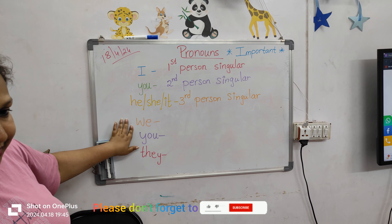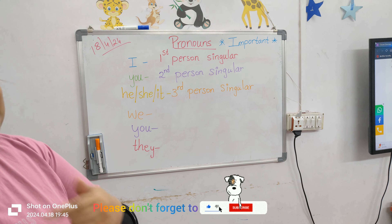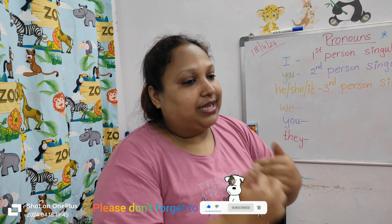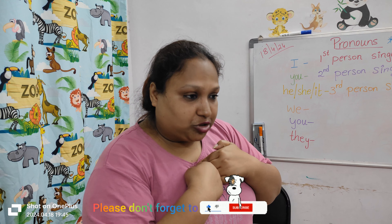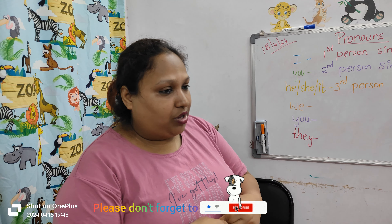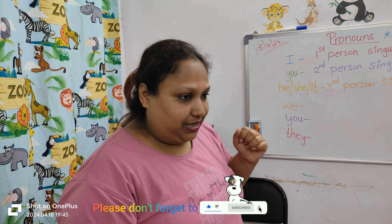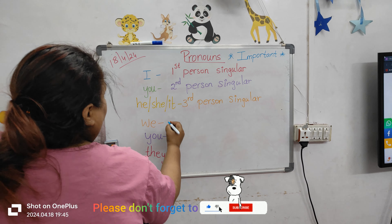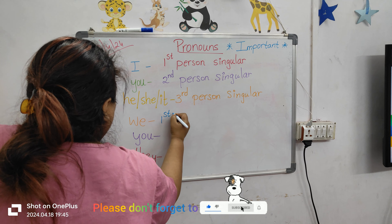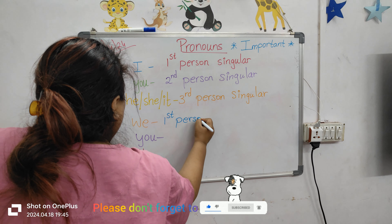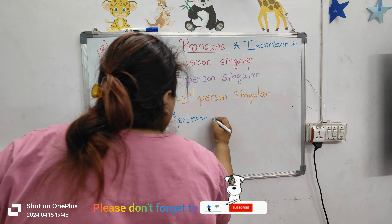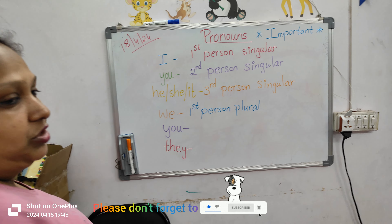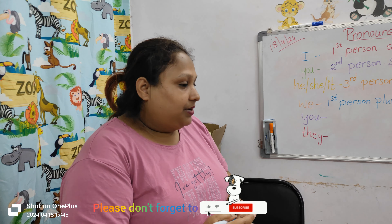Now let's go down. 'We' — when I talk about 'we', even I am included. It is 'we'. For example, 'We all will be going for a picnic' — so I will also go with you. So it is first person plural. Why plural? Because along with me, you all are also there.